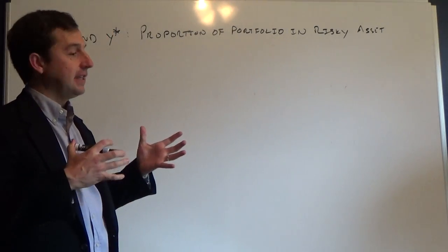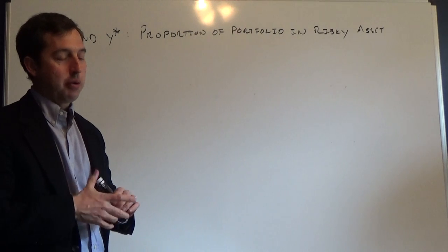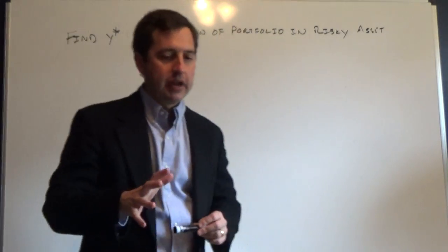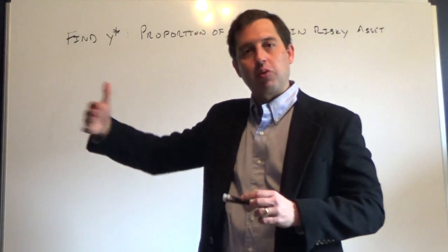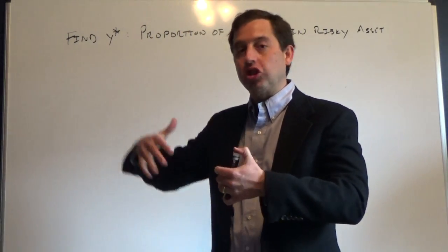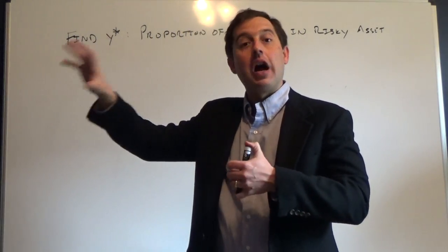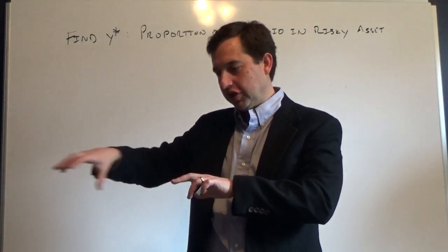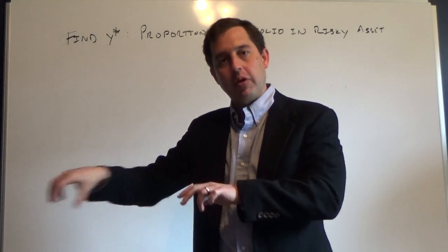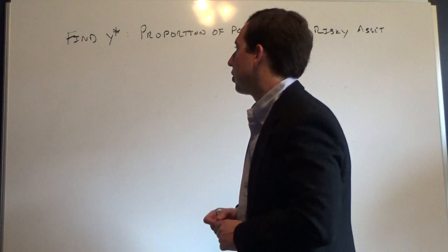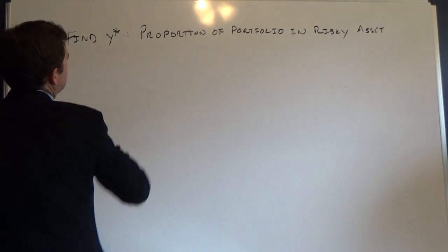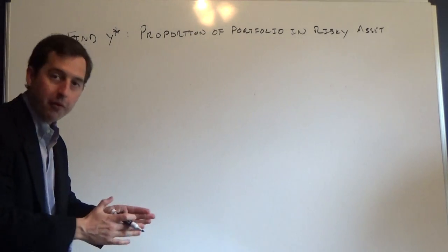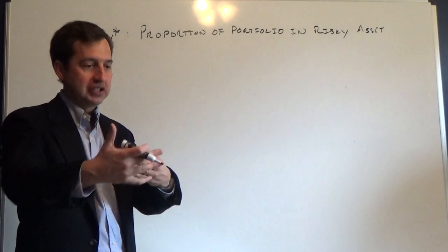What we want to do in this brief lecture is find the proportion of our complete portfolio that we are going to invest in the risky asset. In a couple of lectures we'll actually construct the risky portfolio, but right now we just assume that we have an optimal risky portfolio. Y is going to denote the proportion of our complete portfolio in the risky asset or risky portfolio.